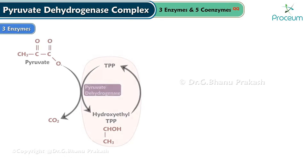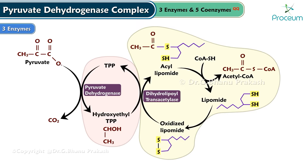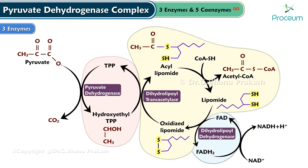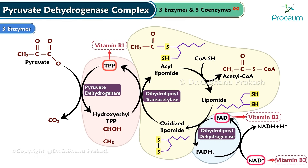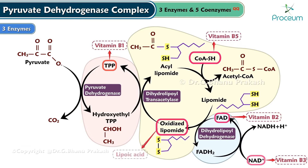The PDH complex consists of 3 enzymes and 5 coenzymes. The 3 enzymes are: pyruvate dehydrogenase with TPP as a coenzyme, dihydrolipoyl transacetylase, and dihydrolipoyl dehydrogenase. The 5 coenzymes are: thiamine pyrophosphate or vitamin B1, FAD or vitamin B2, NAD or vitamin B3, coenzyme A or vitamin B5, and lipoic acid.